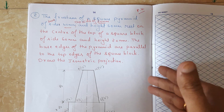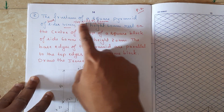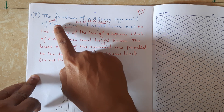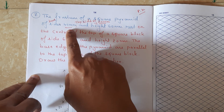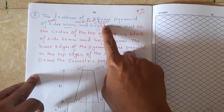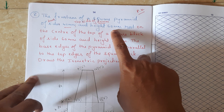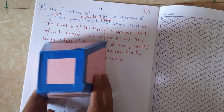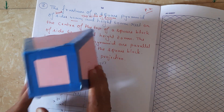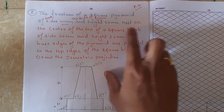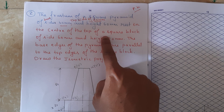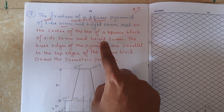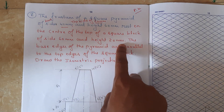So here in this problem, they are telling that there is a frustum of a square pyramid where the base side is 40 mm, top side is 20 mm, and height is 60 mm. This frustum of a pyramid rests on the center of the top of a square block of side 60 mm and height 20 mm.